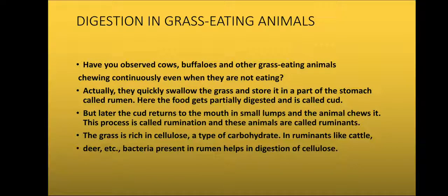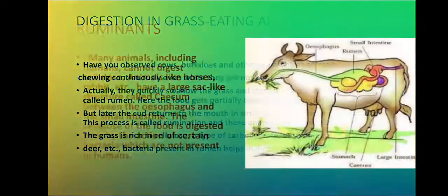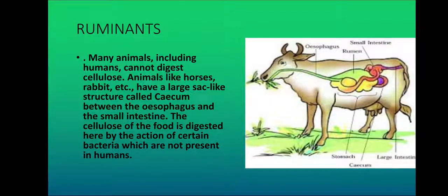Because we lack this cellulose-digesting bacteria, we cannot digest cellulose — that is why we do not eat grass. This is the reason why these animals can feed upon grass and we cannot. This diagram shows the digestive system of ruminants.